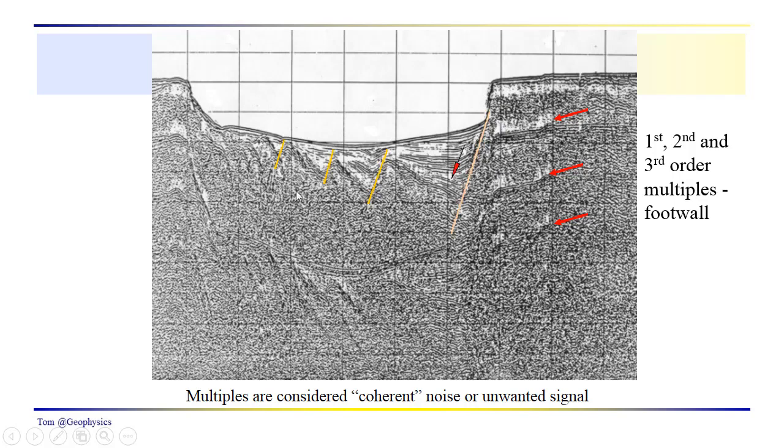We can see these faults over here. What about the deeper part of the section? Can we see this water bottom reflection? Indeed we do, and we can see the multiples over here of the water bottom on the left side of this section as well. So the problem for the interpreter is that multiples are coherent noise. They show up as what might be interpreted as actual geologic intervals, which could give rise to significantly erroneous interpretations for the interpreter.